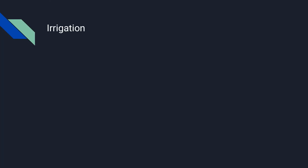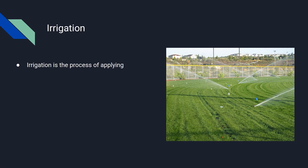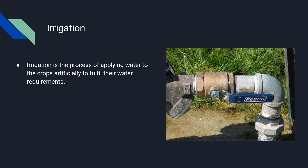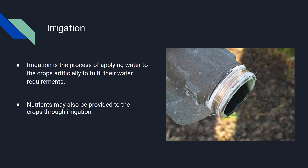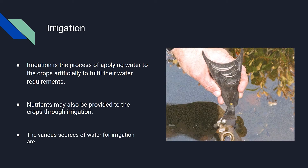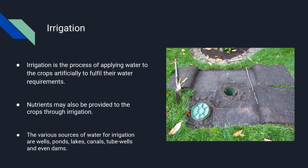Irrigation is the process of applying water to the crops artificially to fulfill their water requirement. Nutrients may also be provided to the crops through irrigation. The various sources of water for irrigation are wells, ponds, lakes, canals, tube wells, and even dams.